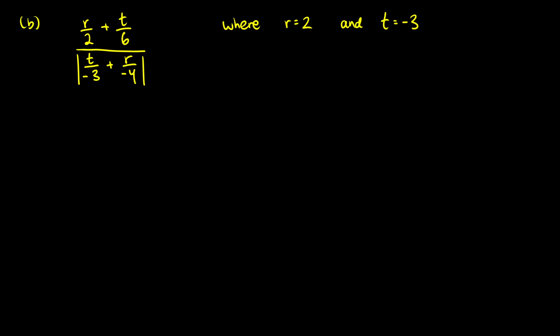Next question, we have an absolute value here. So maybe you can remember how to do these from the absolute value video. First thing we're going to do is substitute in our variables with numbers. So r is 2. So we're going to have 2 divided by 2 plus t over 6. So that'll be negative 3 over 6. And that's going to be divided by the absolute value of t over negative 3. So that'll be negative 3 over negative 3. And then we're going to add r over negative 4. So that's going to be 2 over negative 4.